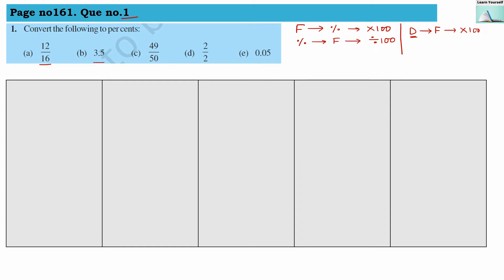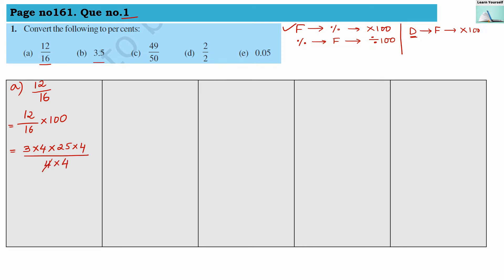Let us start with (a): 12 by 16. This is in fraction form. To convert into percentage, we multiply with 100. So 12 divided by 16, multiplied by 100. Simplifying: 12 = 3×4 and 100 = 25×4, denominator is 16 = 4×4. The two 4s cancel, leaving 3 × 25 = 75. So 75% is the answer for the first numerical.